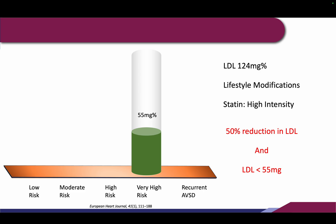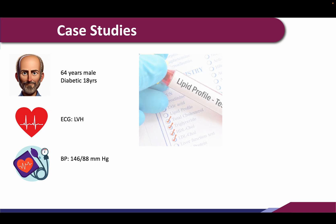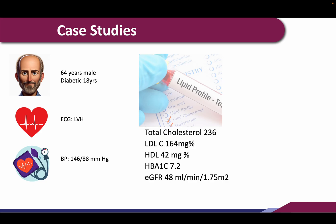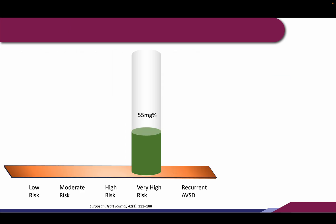Another patient: a 64-year-old diabetic male who is hypertensive, with an ECG showing left ventricular hypertrophy. He has multiple risk factors. His total cholesterol is 200 and LDL is 164. He falls in a very high risk category with a 32% risk of developing a coronary artery or cardiovascular event in 10 years. The LDL target should be less than 55.